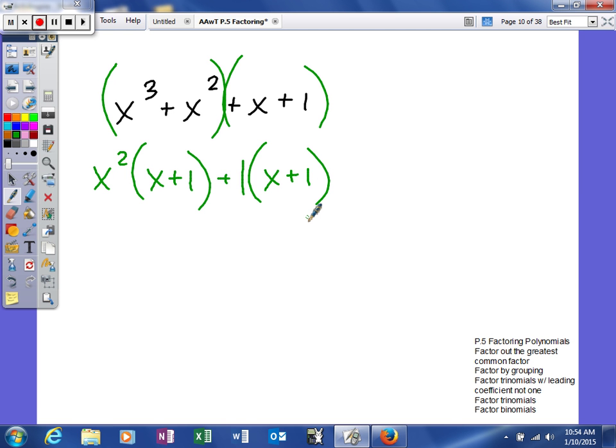We have one more step to go, and it's to factor out the common factor. The reason I know I have one more step is because I don't have a binomial times a binomial. So when I do this, I factor out my common factor of x plus 1 and group together my two coefficients.